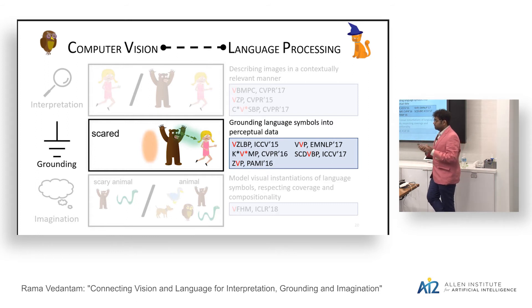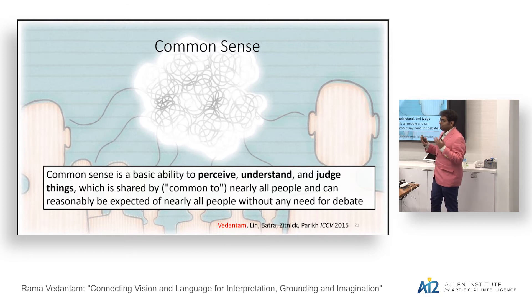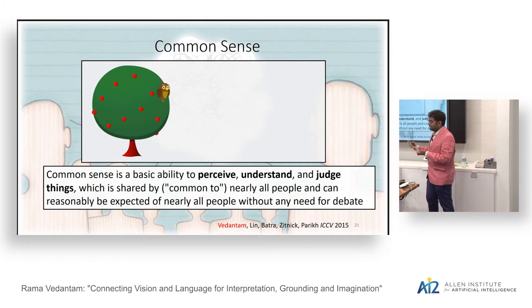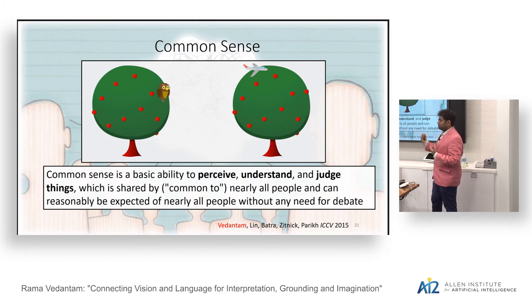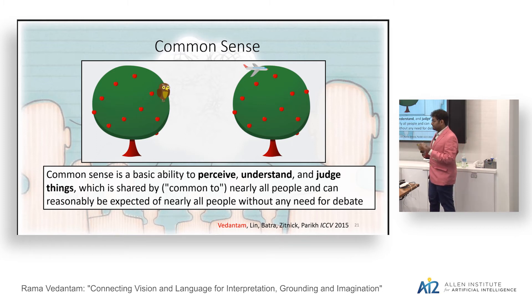One of the things we look at in grounding is the problem of modeling common sense — the basic ability that we all have to perceive or judge things. For instance, you would not be surprised to see an owl sitting in a tree — that's plausible. But if I showed you an image of an airplane sitting in a tree, you would be surprised — even though both owls and airplanes fly. These are the kinds of judgments we make when presented with a scenario.